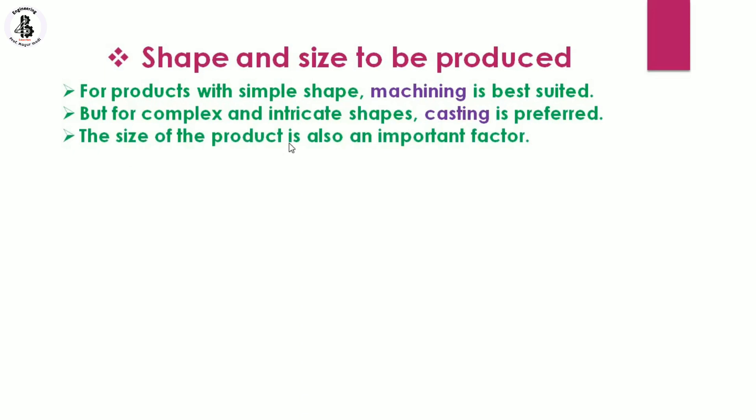The size of the product is also an important factor. As per the requirements of the application, the size of the product matters. If it is extremely small, a different manufacturing process is needed. If it is a large component, another process applies. Different sizes of products require different kinds of production processes.